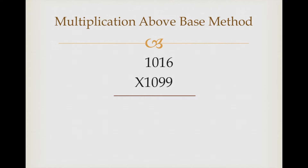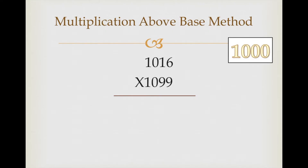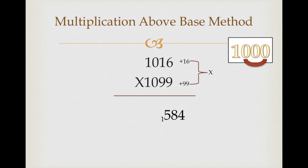Let's take one more example: 1016 multiplied by 1099. Here the base is 1000. 1016 is 16 above base, and 1099 is 99 above base. When we multiply 16 and 99, the product is 1584. But in base 1000 there are 3 zeros and the product has 4 digits, so we write 584 and carry 1.